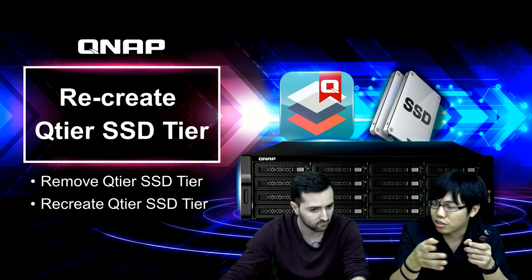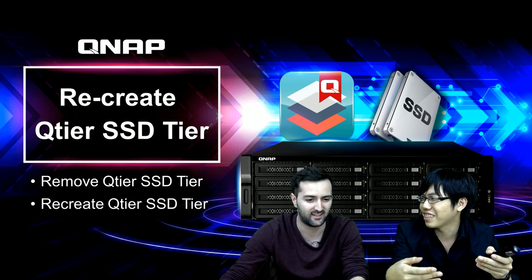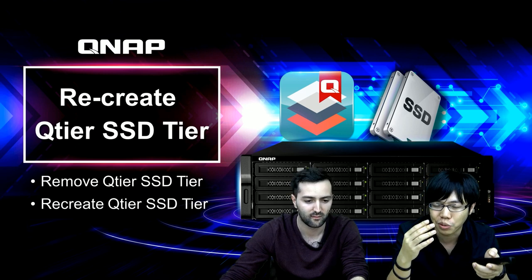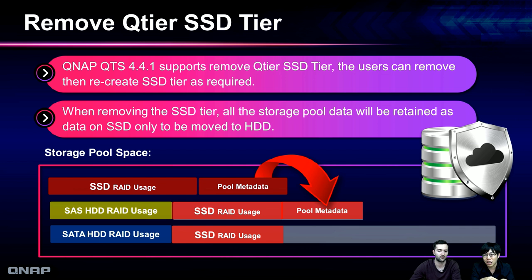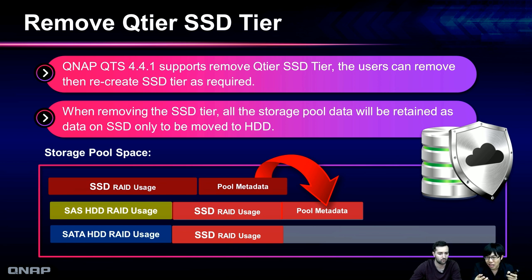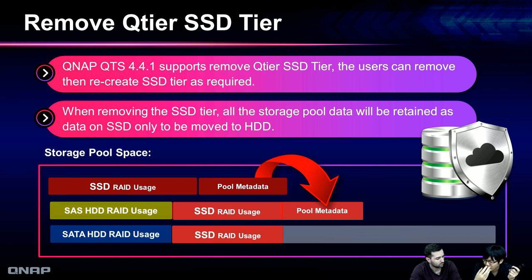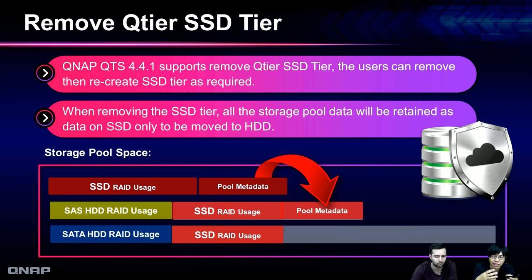After seeing those trends and challenges, let's go into our new feature on how we allow IT managers to recreate the SSD tier. We introduced the function to remove the QTier SSD tier in 4.4.1, which allows users to simply remove the SSD tier and update it back with a different SSD configuration later — while allowing users to retain all the data in the storage pool. Before, if a user wanted to replace the SSD tier in QTier, they could back up all data and then recreate another storage pool, but that's very inconvenient. The important thing is that users don't need to back up data to another place while removing the SSD tier.